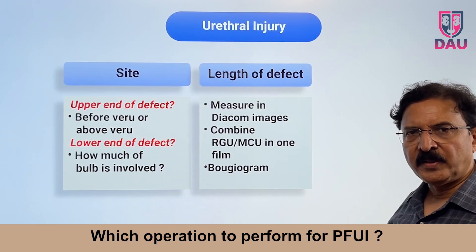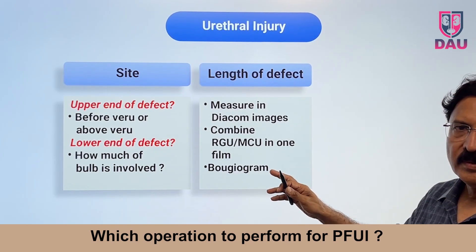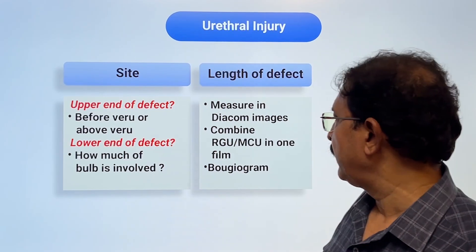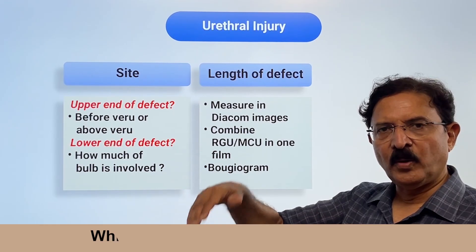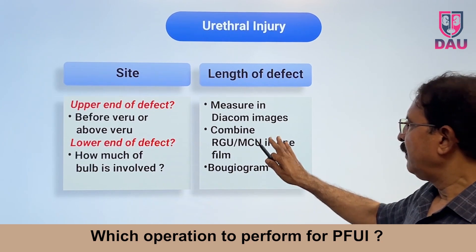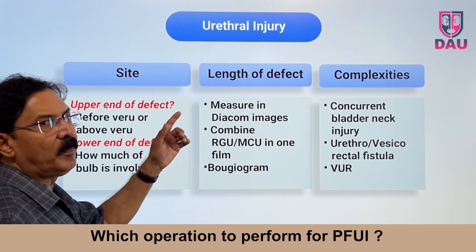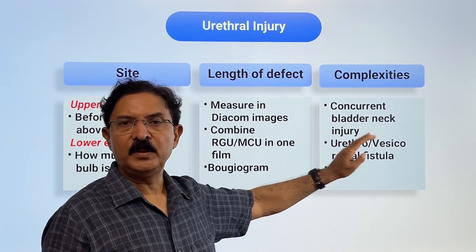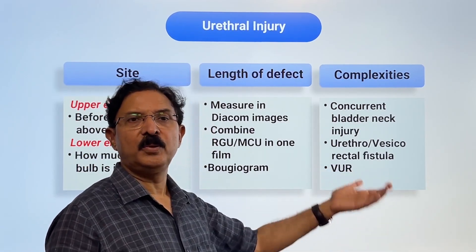You have to measure the distance between the two ends — the length of the defect. If there is a scale given on the film you can know immediately; if not, you can superimpose the RGU or MCU pictures. In the past we used a bougiogram technique, but now we use the superimposition technique. The third point is complexity: is there a concurrent bladder neck injury, a urethrorectal fistula, or reflux into the kidneys?